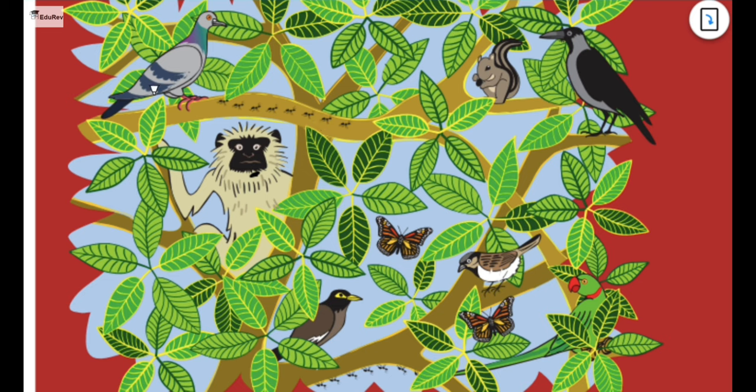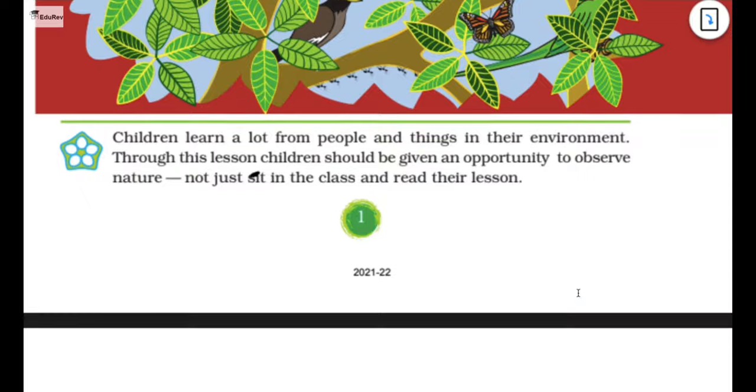We have pigeon, just see where my pen is actually going. This is a pigeon, this is a monkey, we have squirrel, ants, I guess it's a sparrow, cuckoo, crow, butterflies, and parrot here. There are so many animals out there.